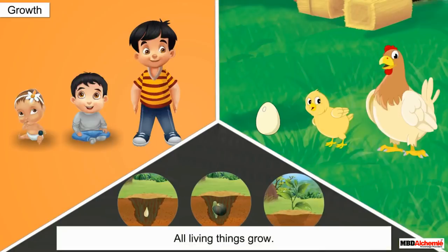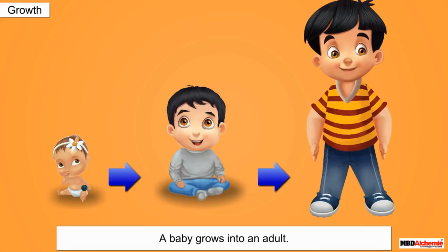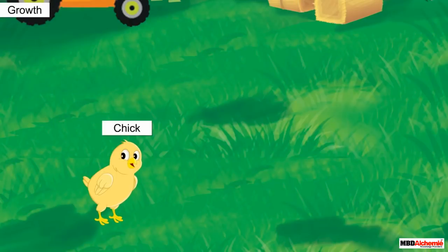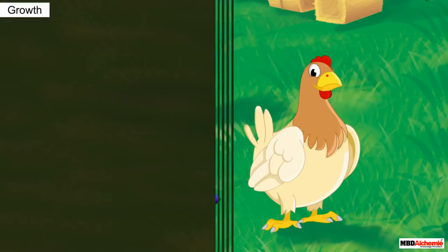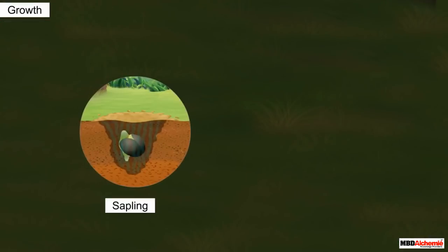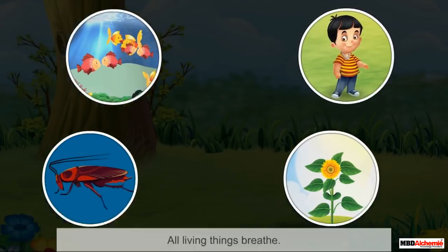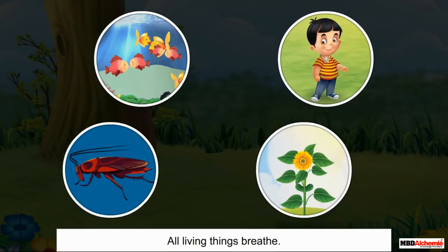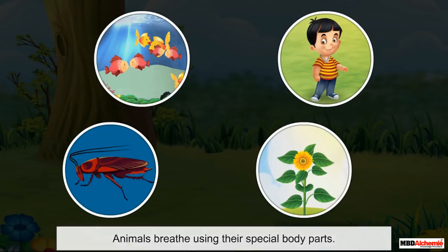Another characteristic of living things is that they grow. A baby grows into an adult, a chick grows into a hen, and a sapling grows into a plant.